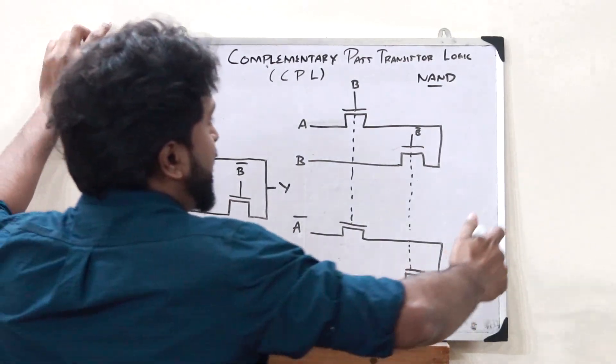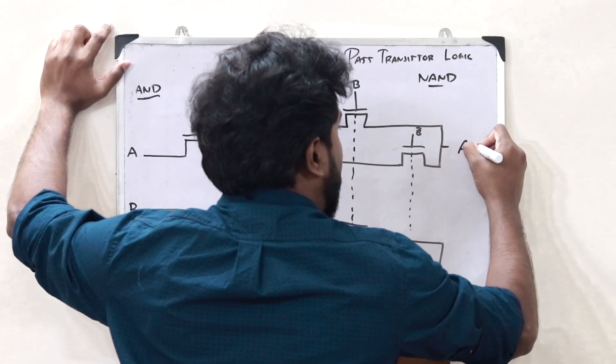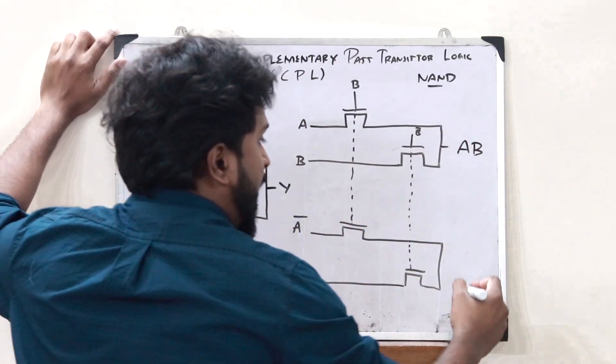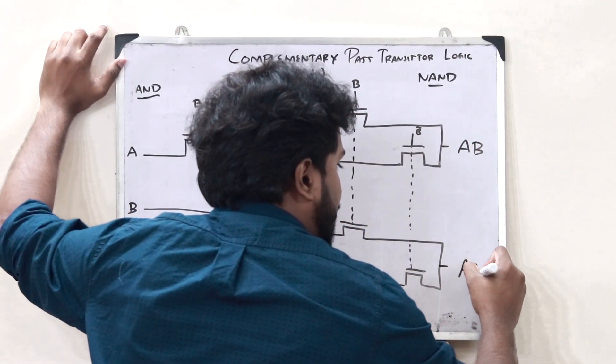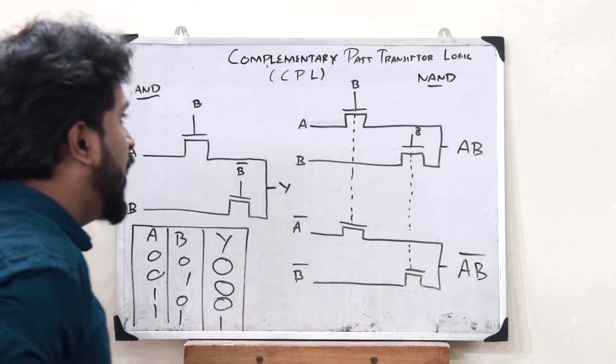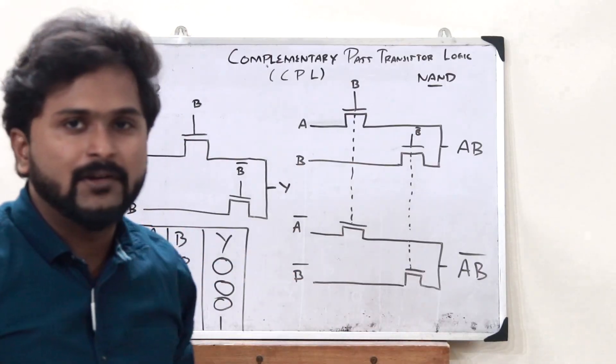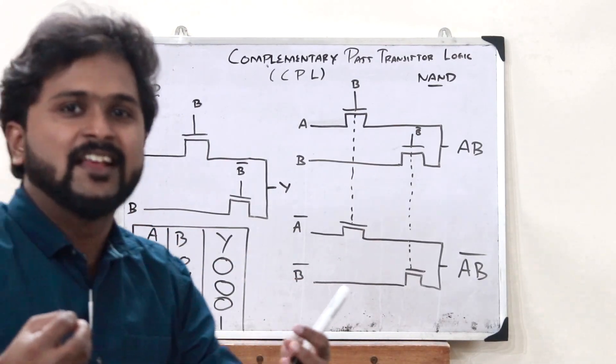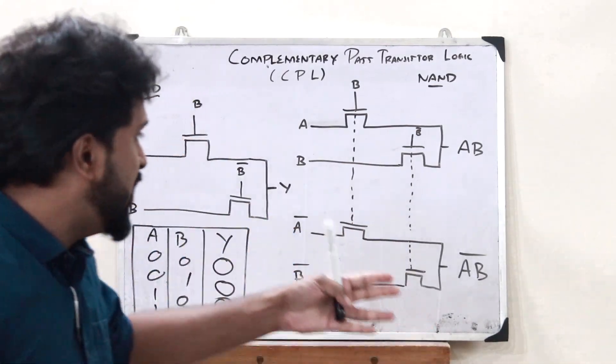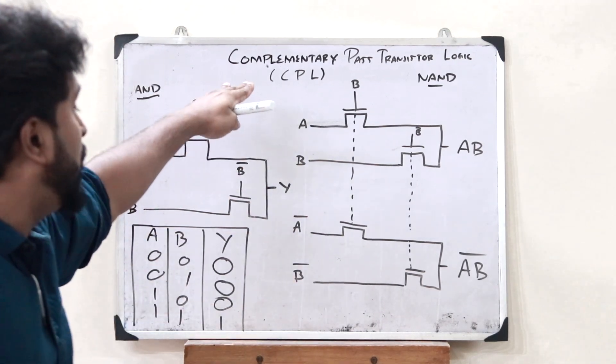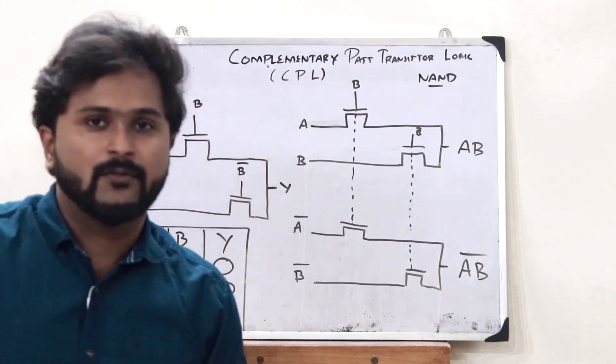The interesting thing here is that here we would get AB or A dot B. And here we would get A dot B, the whole bar. That is, we are getting both AND as well as NAND operation over here. So, this is simply how we obtain a NAND logical operation with the help of a complementary pass transistor logic.